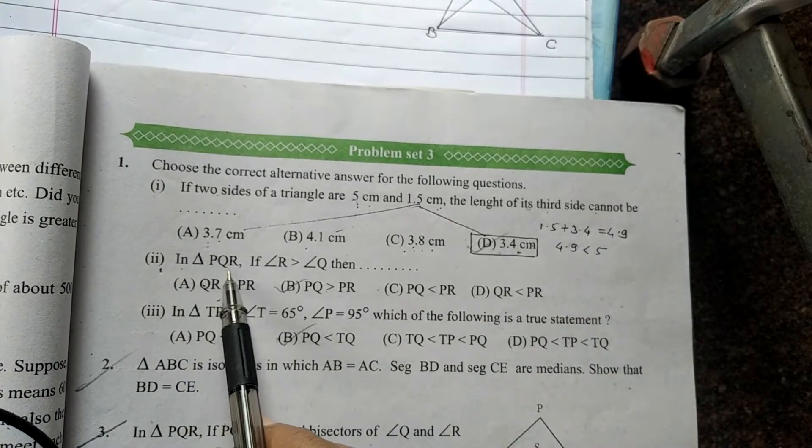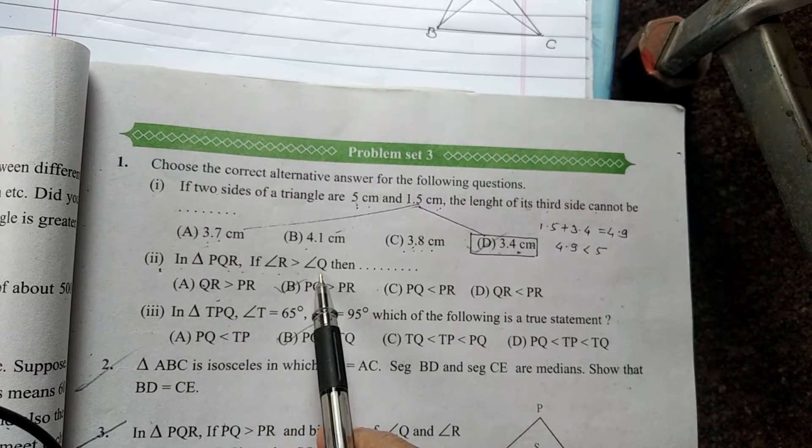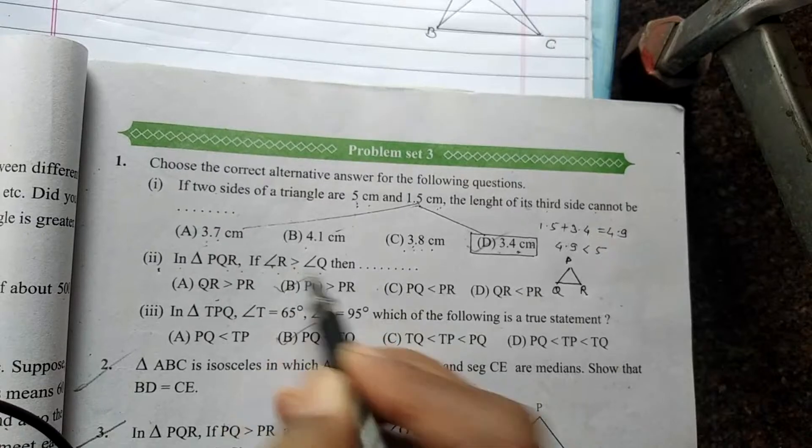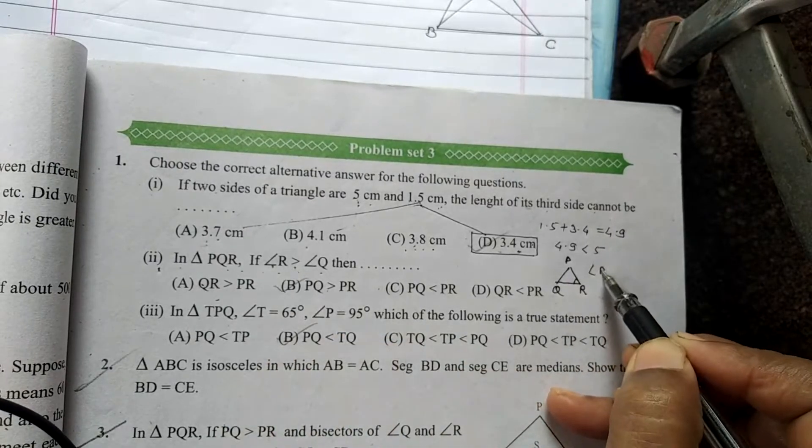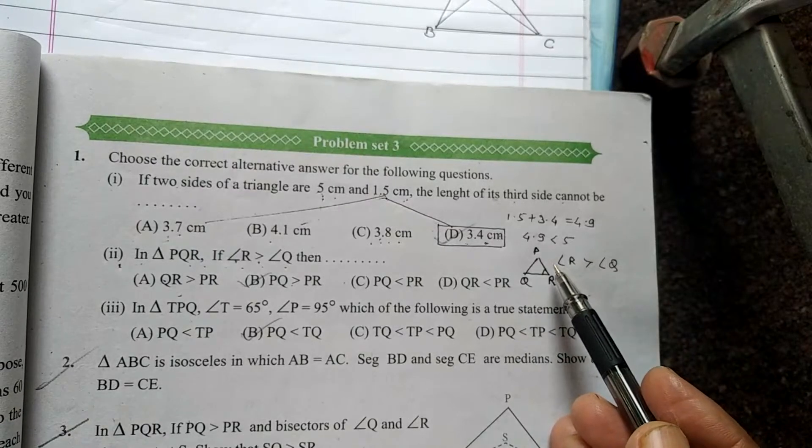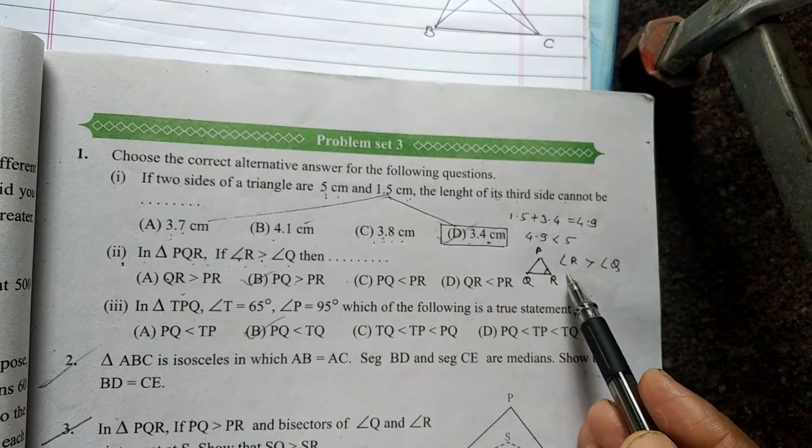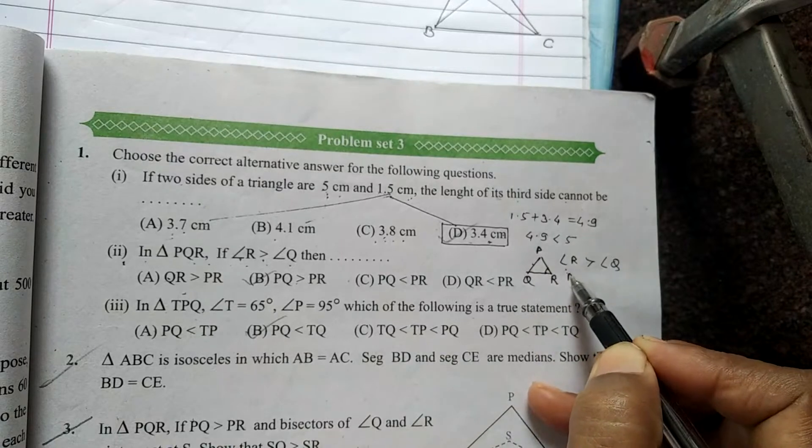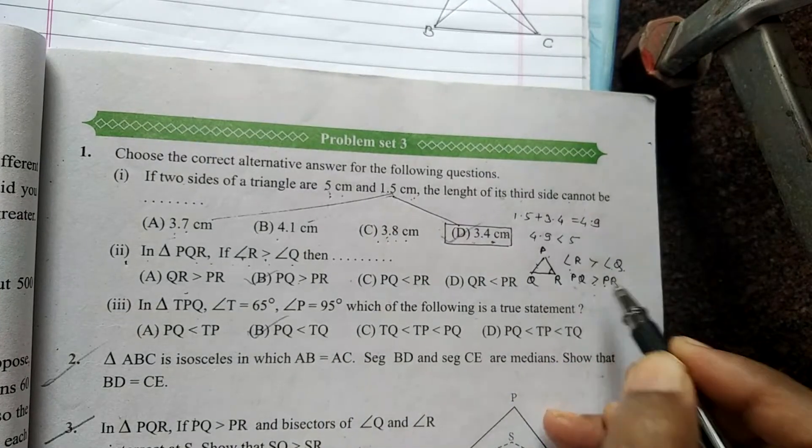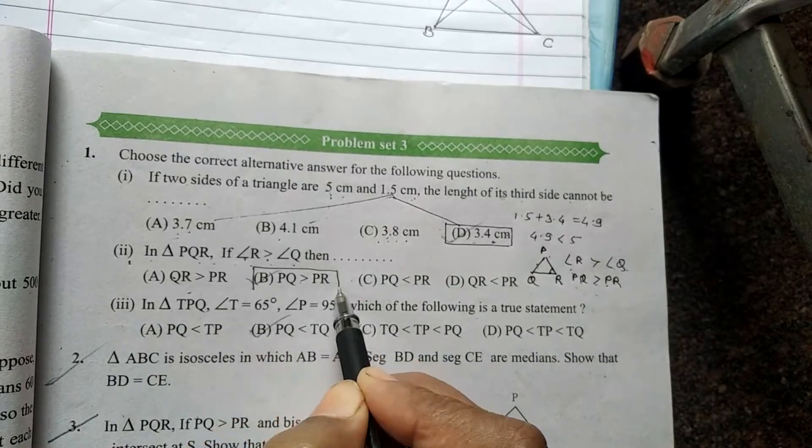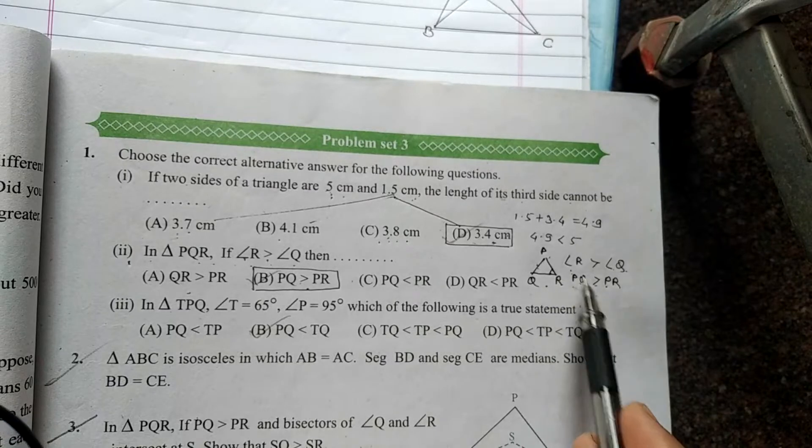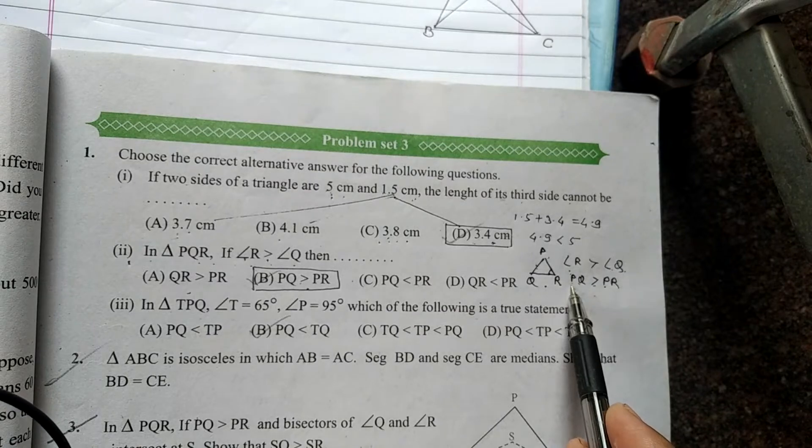Then another question: In triangle PQR, if angle R is greater than angle Q, then angle R is greater than angle Q. Our point of view is that the side opposite to larger angle is larger, then PQ is less than QR. Reason: side opposite to larger angle is larger.